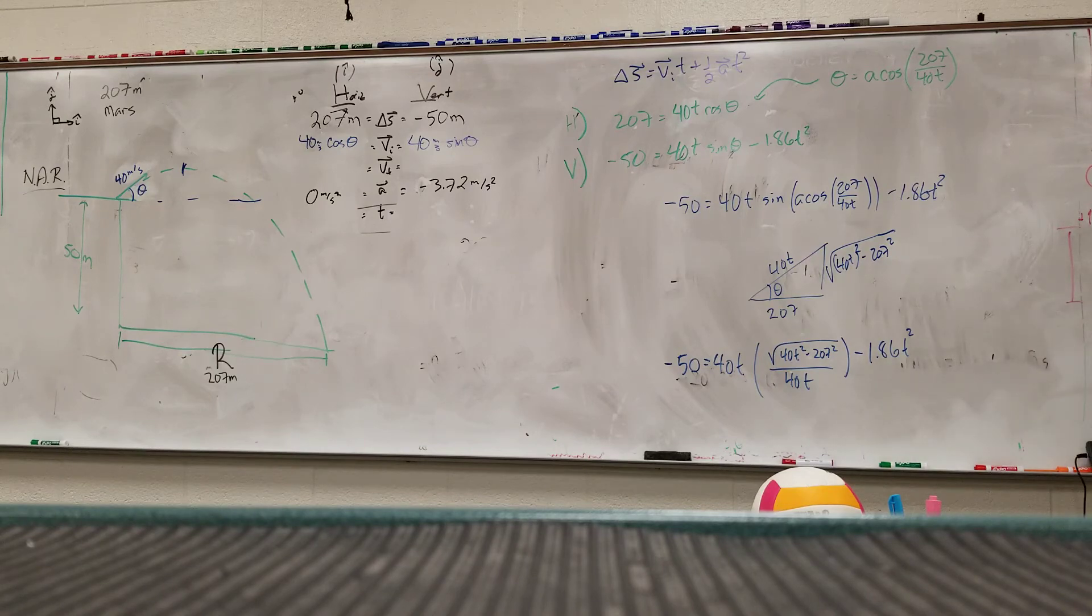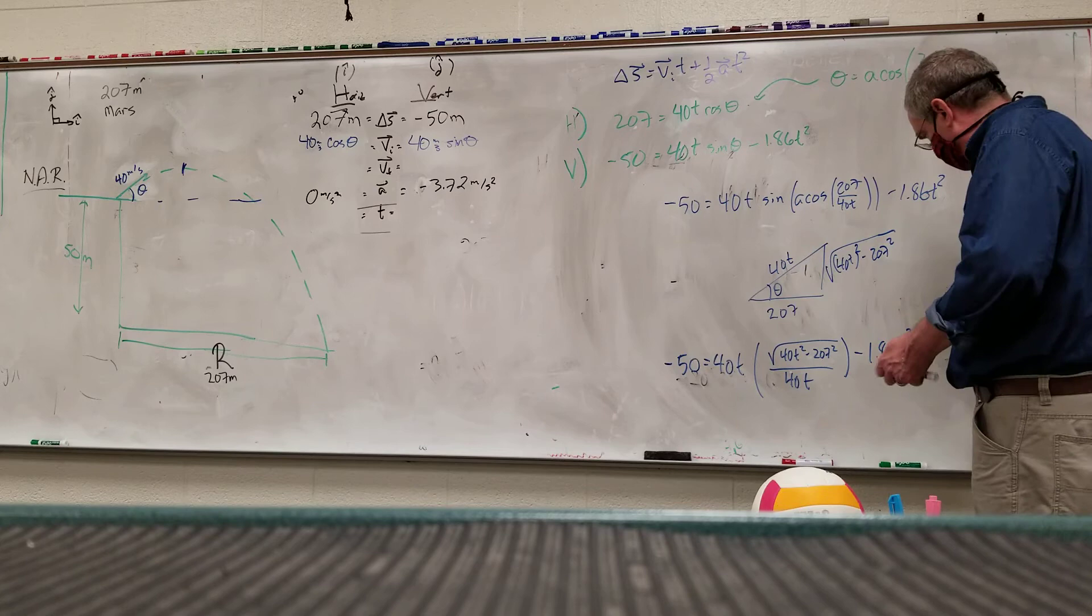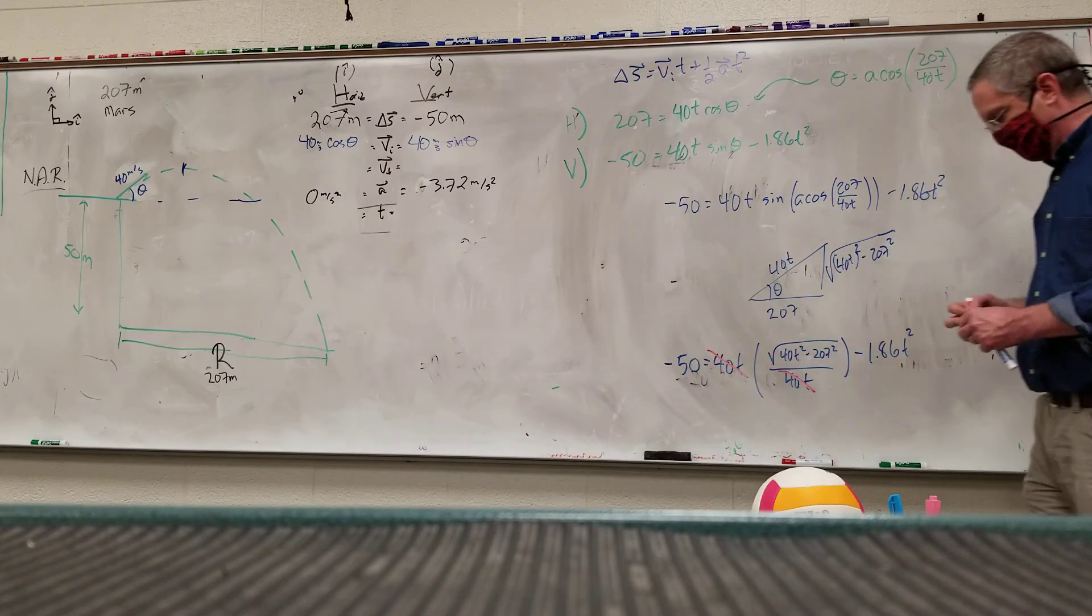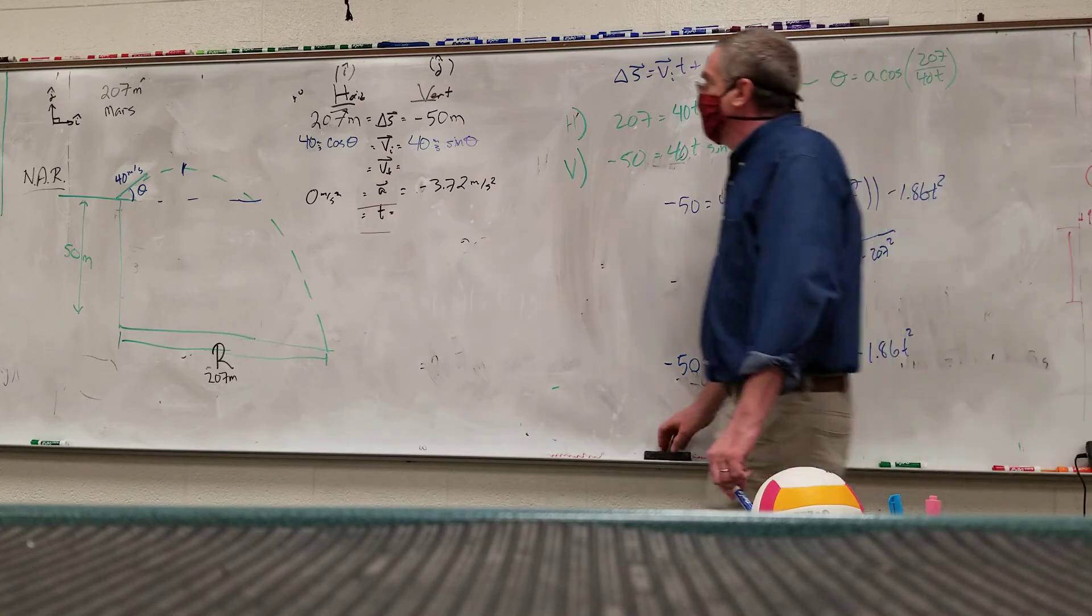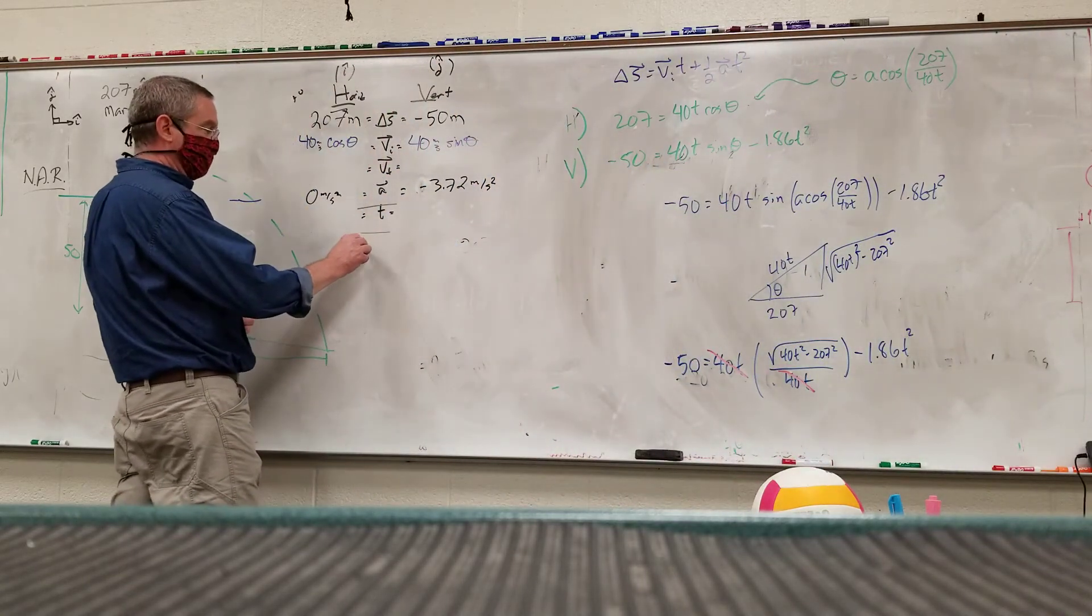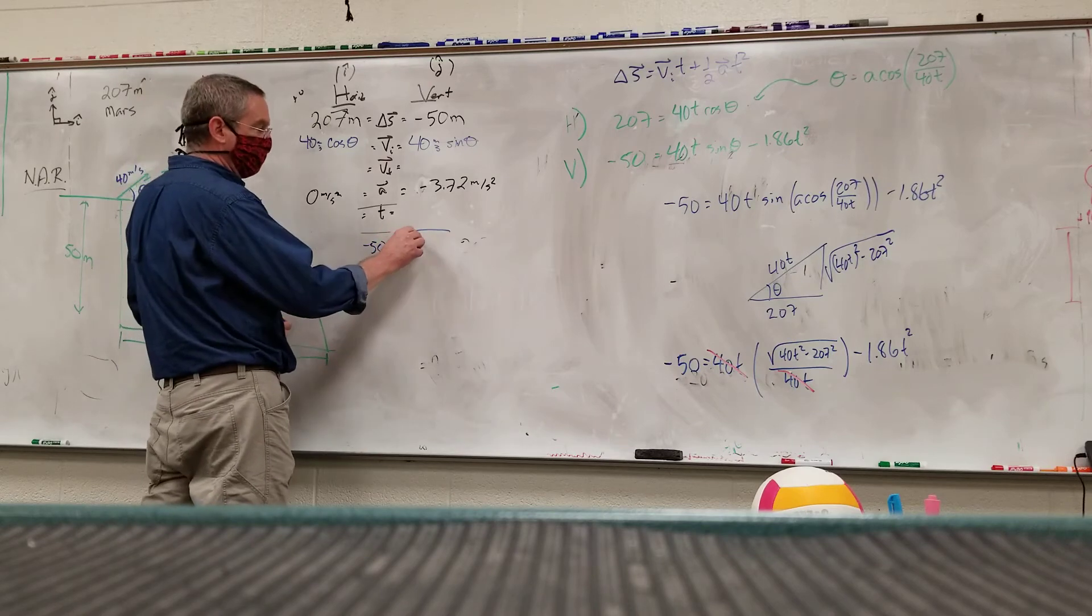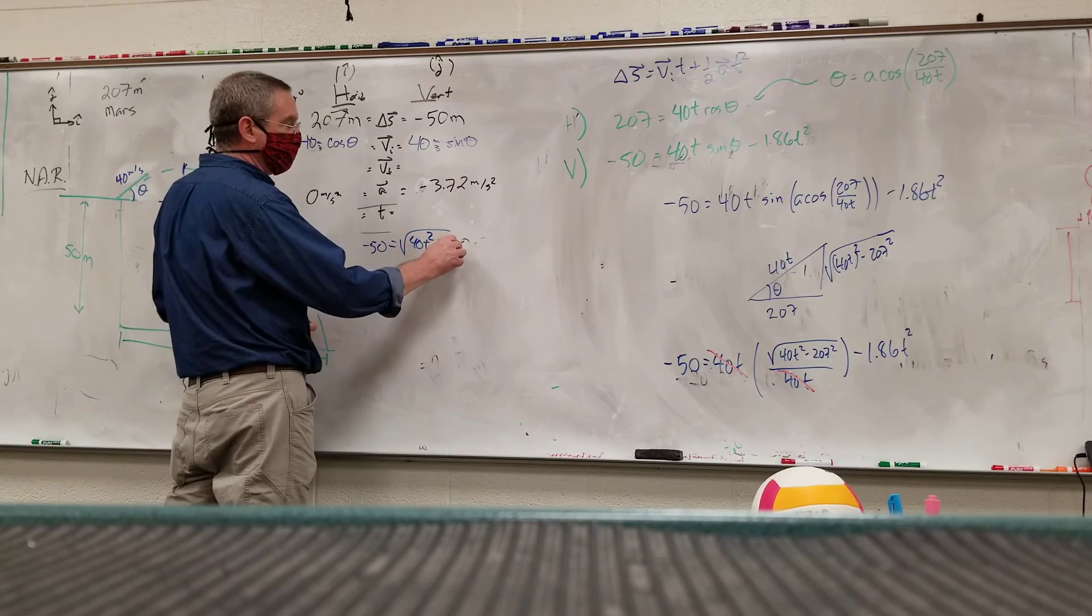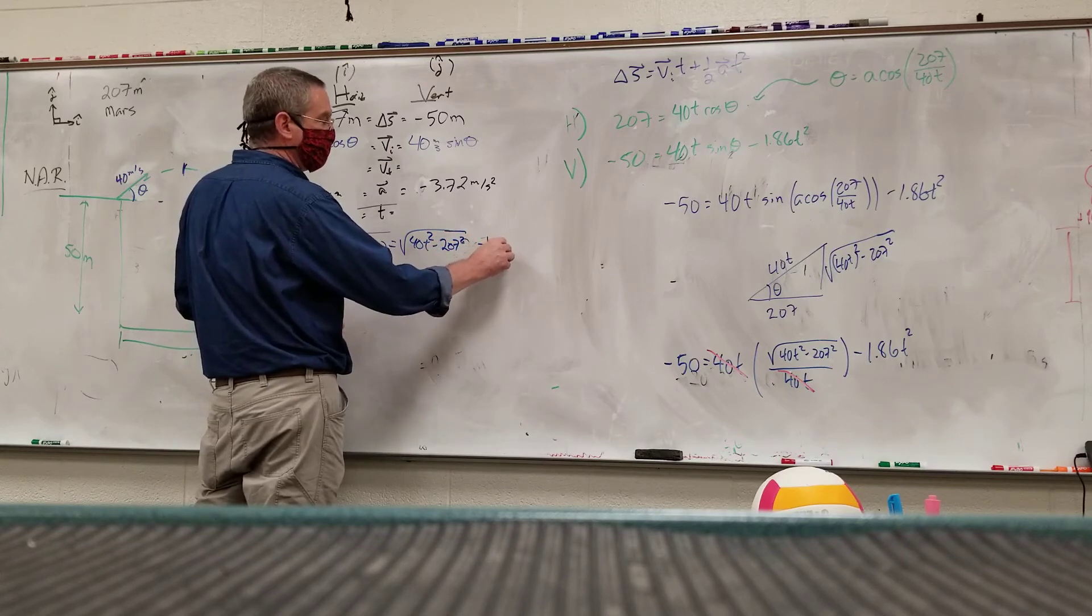So how do we solve this? I put it in my calculator and put it in my height and then solve that one. You just added 50 to both sides? I tried to find the zeros? Alright, so that's one way, but we can do better than that. Can't you cancel 40t? Yep, alright, so 40t cancels out. So I'm now left with negative 50 is equal to the square root of 40t squared minus 207 squared minus 1.86t squared.